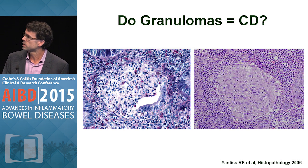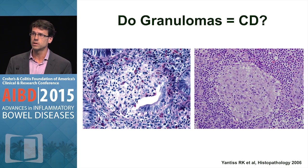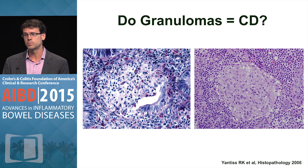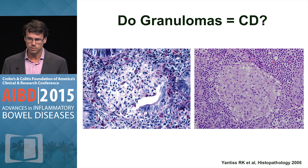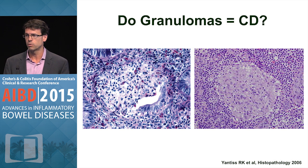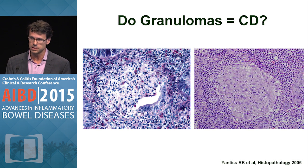Under the microscope, on the left you see a granuloma in ulcerative colitis associated with a ruptured crypt, showing an admixture of various inflammatory cells. On the right is our classical Crohn's granuloma with activated histiocytes and some multinucleated giant cells.